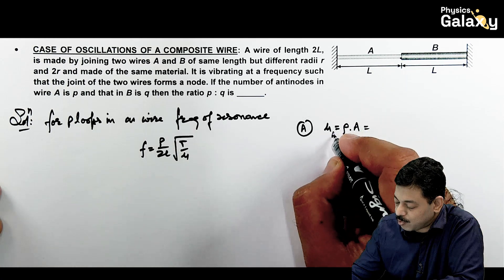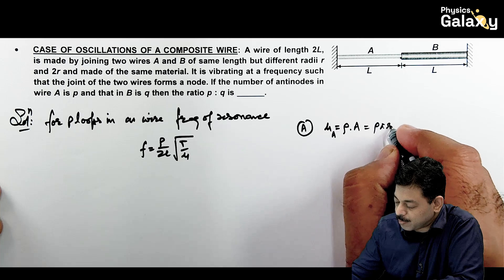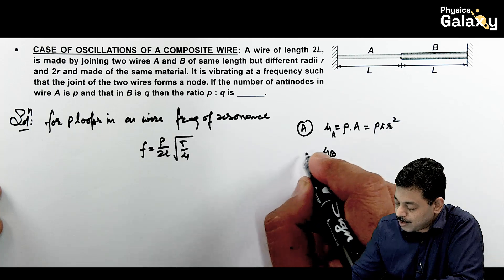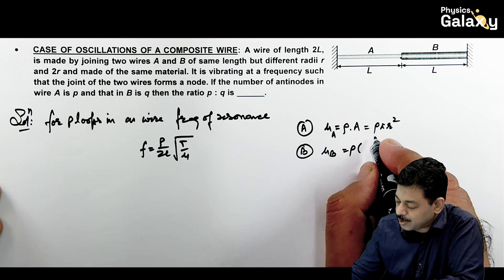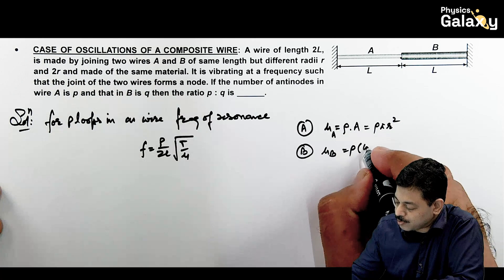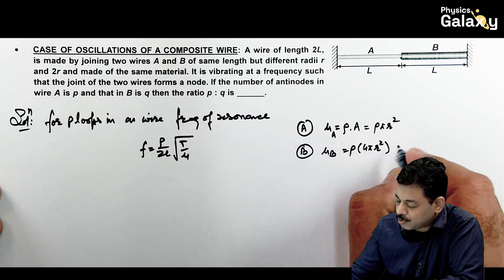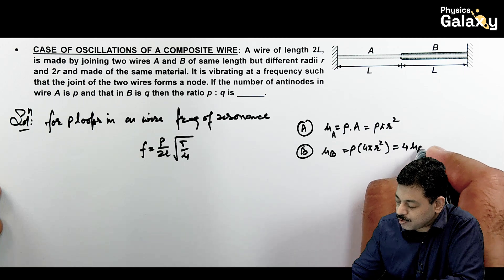And mu of B for wire B, if we look at this is rho multiplied by pi into 2R square. So this is 4 pi R square. So mu B is coming out to be 4 times of mu A.